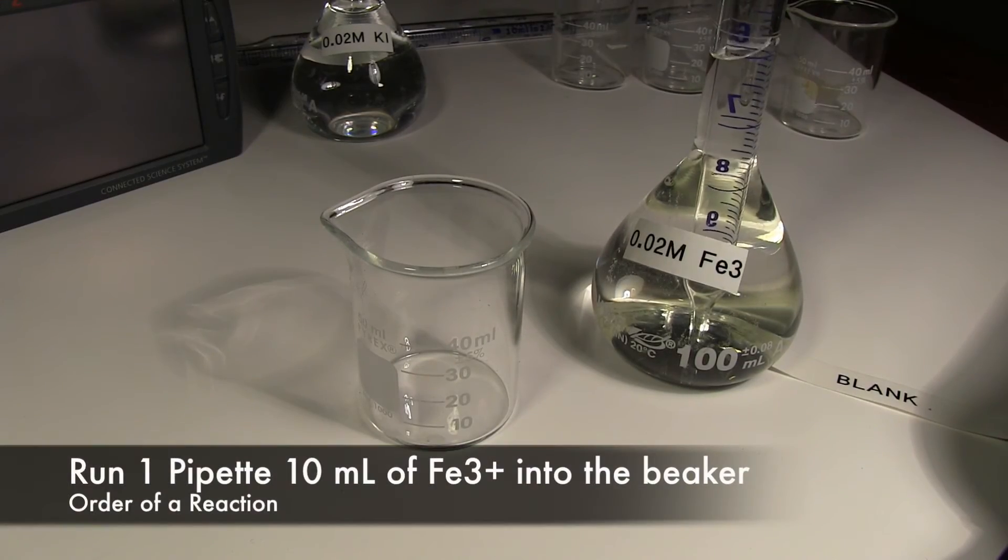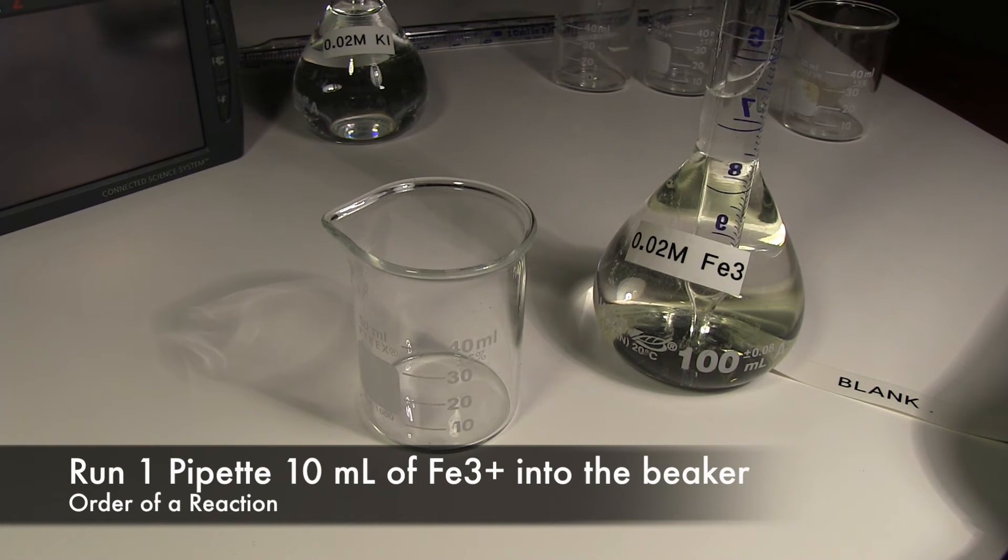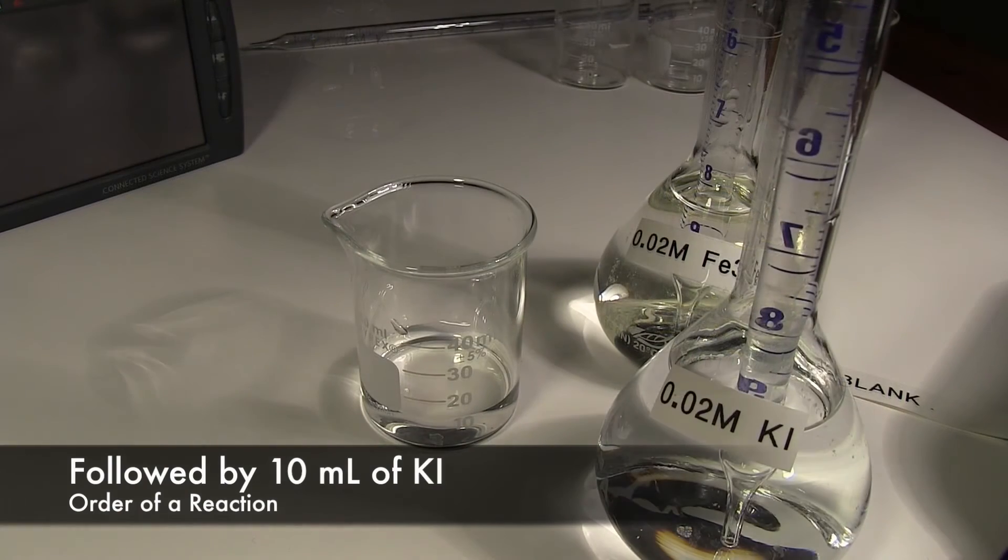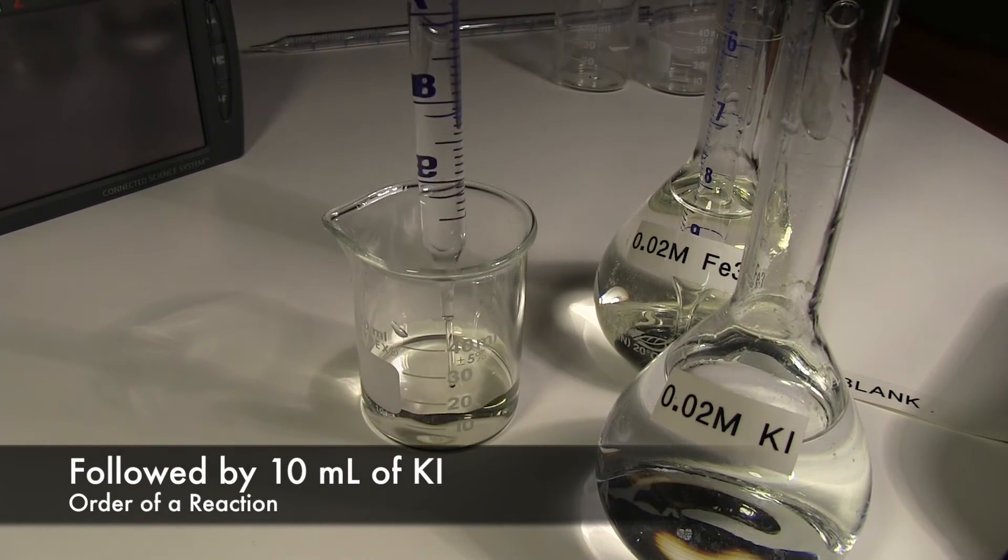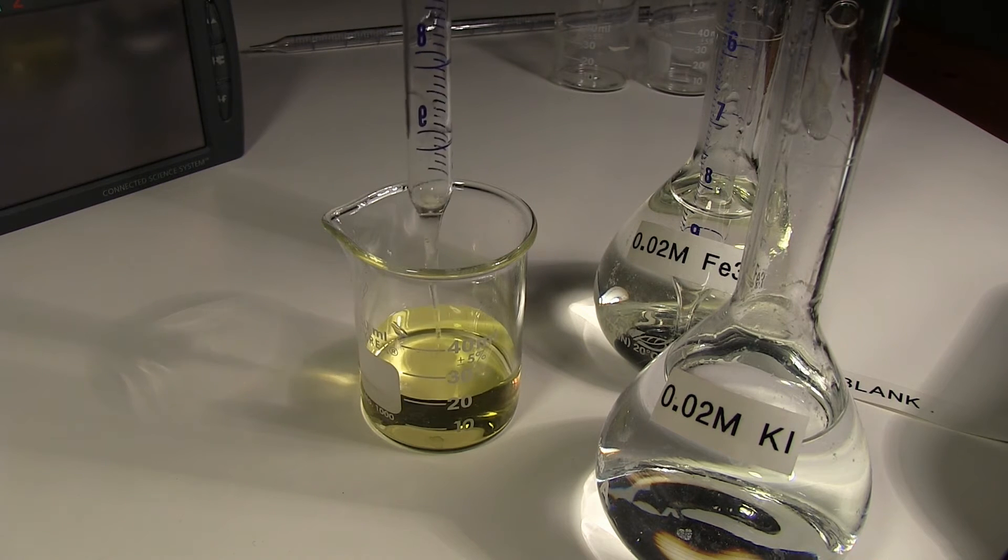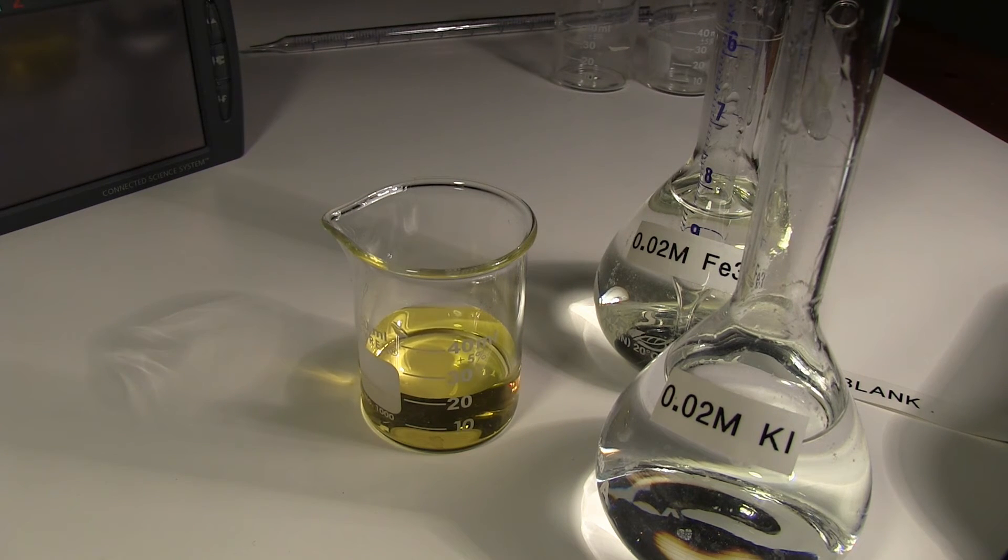Run 1. Pipette out 10 ml of iron 3 solution into the beaker, followed by 10 ml of potassium iodide into the same beaker. Keep the time consistent between mixing of the two solutions and data collection on the LabQuest for all three runs.